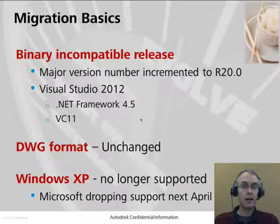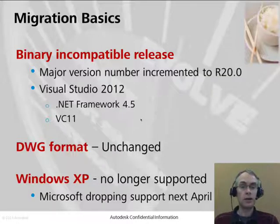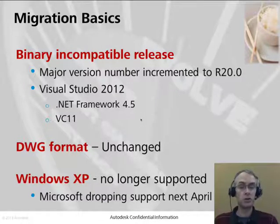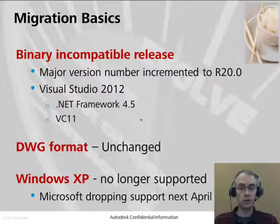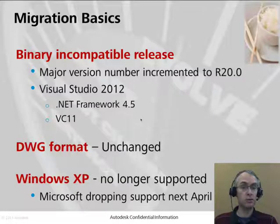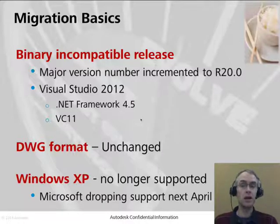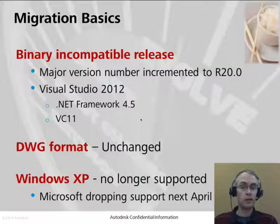This slide is really just a summary of everything you need to know about migrating your application to AutoCAD Longbow. First of all, it's a binary incompatible release — AutoCAD is being compiled with a different Visual C++ compiler than the previous version. We're using Visual Studio 2012, which means VC11 and .NET Framework 4.5. Because it is a binary incompatible release, we've incremented the major version number from 19 to 20. If you have any code accessing registry values for a particular version of AutoCAD, or if you're using Autoloader, you need to update that version number accordingly.